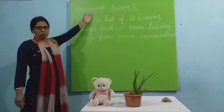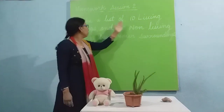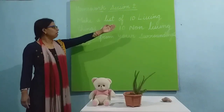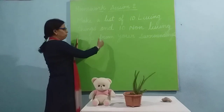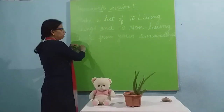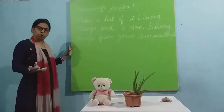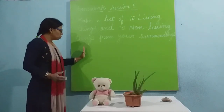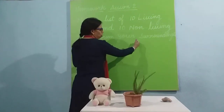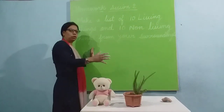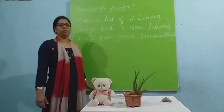Here is the homework for session 2 — you have to make a list of 10 living things and 10 non-living things from your surroundings. In your notebook, make 2 columns: in one column write living things, in the other write non-living things. Look around yourself and list things you think are living or non-living. Meet you in the next session. Thank you.